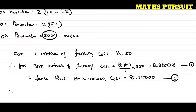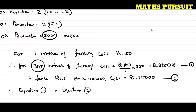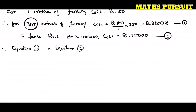Since both represent the cost of fencing the same plot, Equation 1 equals Equation 2. Therefore, 3000x = 75,000. Dividing both sides by 3000 to isolate x, the 3000s cancel out, giving x = 25.